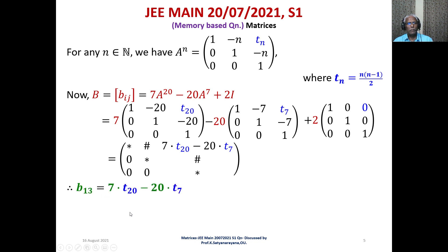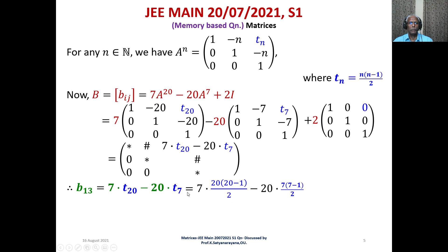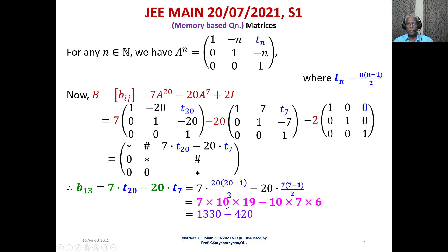Therefore b₁₃ = 7·t₂₀ - 20·t₇. Using tₙ = n(n-1)/2: t₂₀ = 20×19/2 = 190, and t₇ = 7×6/2 = 21. So b₁₃ = 7×190 - 20×21 = 1330 - 420 = 910.